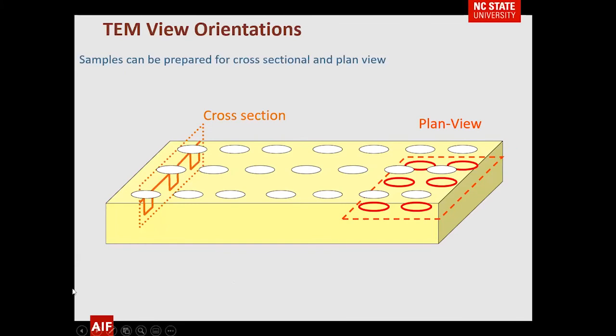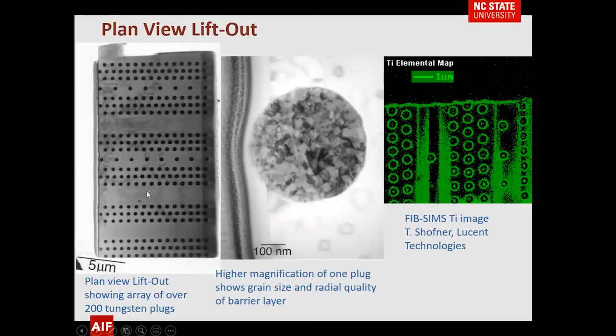So far we've talked about cross-section TEM orientations. It's also possible to do plan view — a little trickier because you have to think about how to mount the sample. If you take two pieces and glue them together edgewise, you can obtain a plan view section. Here's an example showing an array of over 200 tungsten plugs. In cross-section you'd only get one little slice out of each plug and couldn't assess uniformity of the cladding layer. We were also able to do FIB SIMS on the same sample, showing the titanium cladding uniformly around the plug with no discontinuities.